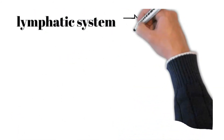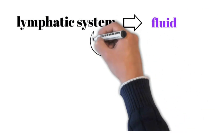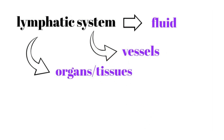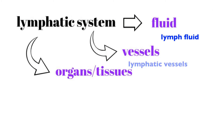Also related to the immune system is the lymphatic system, which is somewhat difficult to separate from the immune system. The lymphatic system includes fluid known as lymph, which is similar to blood plasma without the plasma proteins; vessels similar to veins known as lymphatic vessels; and specific organs and tissues working within the realm of the lymphatic system.